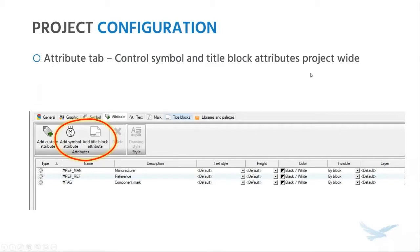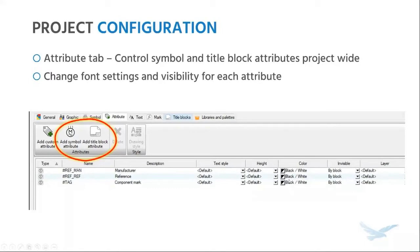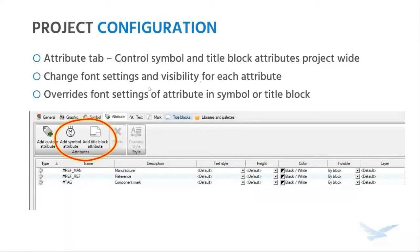Another tab recently added is the attribute tab, which controls symbol and title block attributes across the project. All symbols come with component tags and manufacturer information, but these attributes are not very standardized. The attribute tab allows you to standardize the font and the height of those attributes across the project. You can also control their visibility — for example, if you're generating a customer-facing drawing package, you can choose to make all the manual part numbers invisible before you print it and then show them again for internal purposes. Whatever settings you opt for, these are going to override the font settings in the symbol or title blocks themselves.